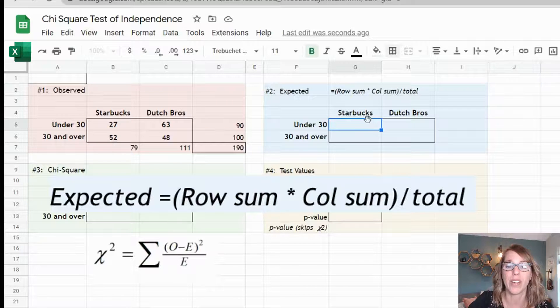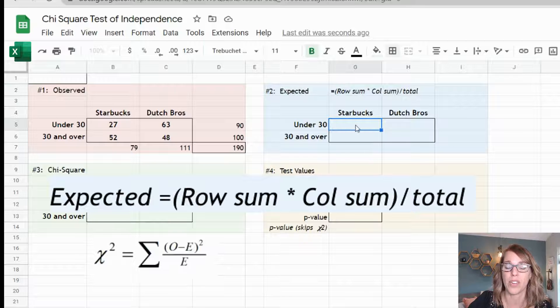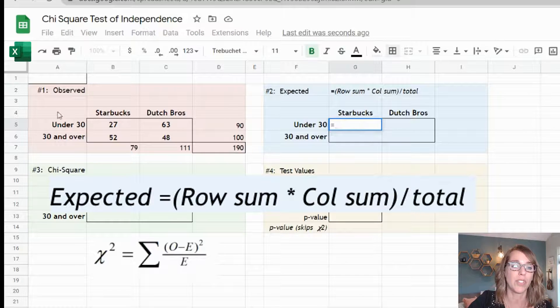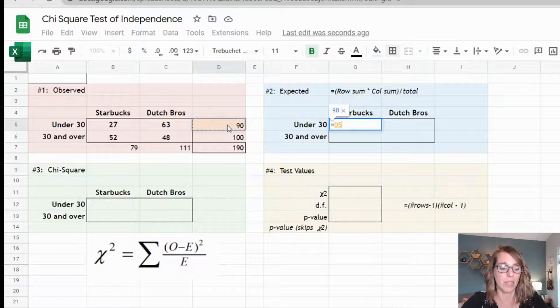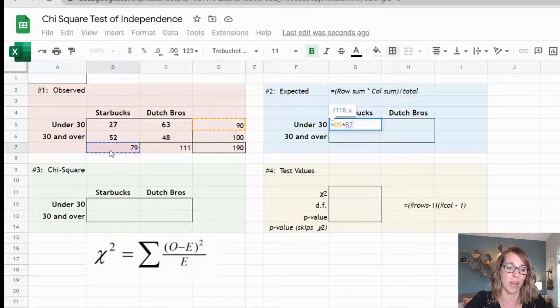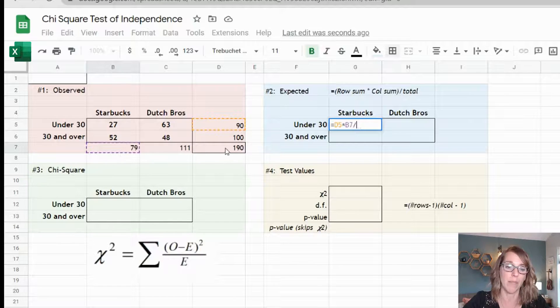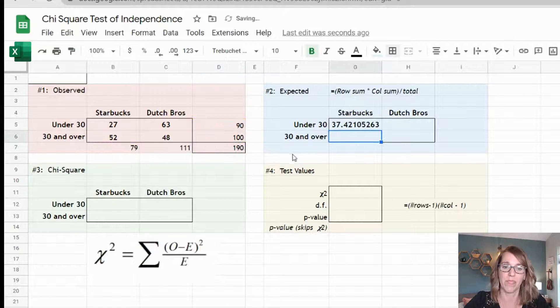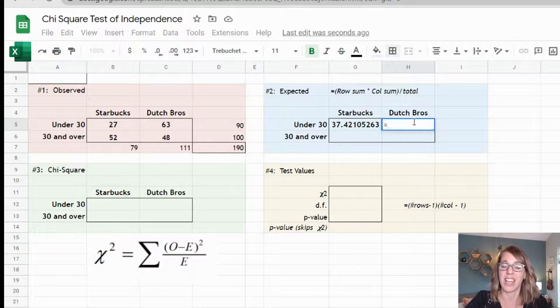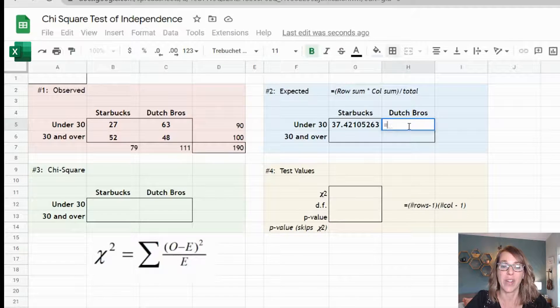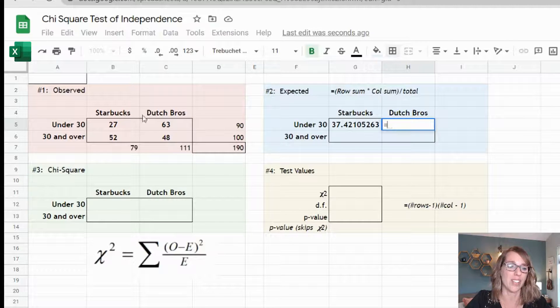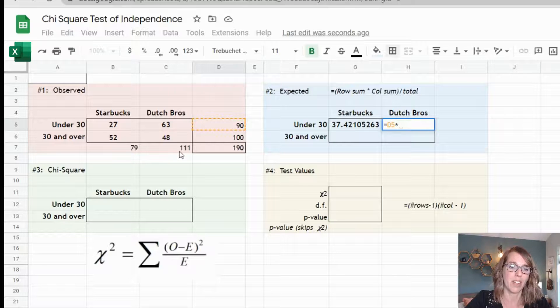For this very first one I'm in the Starbucks row, the under 30 column. So I'm going to go equals that under 30 row sum times the Starbucks column sum divided by my total, then enter. For the Dutch Bros, I'm going to type enter again and then I want the Dutch Bros under 30, so under 30 times Dutch Bros divided by total.